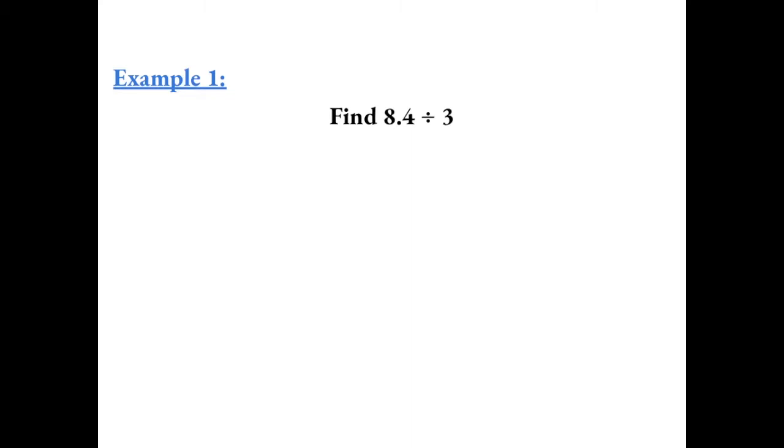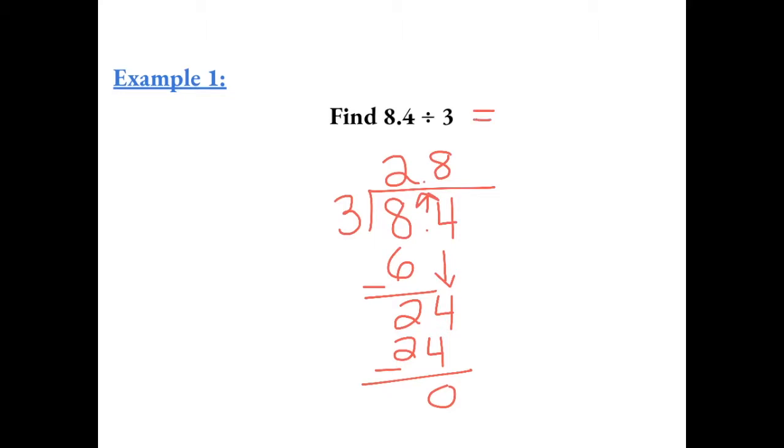Example 1: find 8.4 divided by 3. So 8.4 is going to go under the division bar. We're dividing by 3, so 3 goes into 8 two times which equals 6. We subtract and get 2, bring down the 4. 3 goes into 24 eight times and 8 times 3 is 24. Now we have to always carry up the decimal, so this equals 2.8.